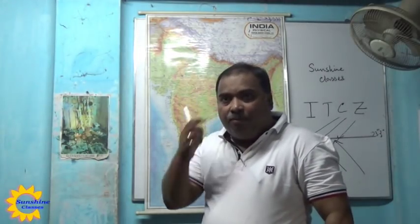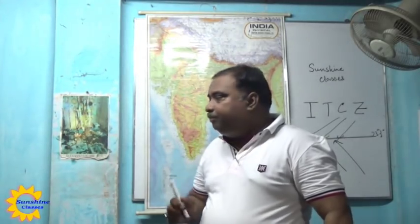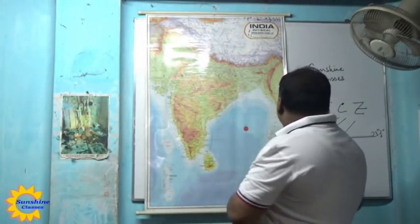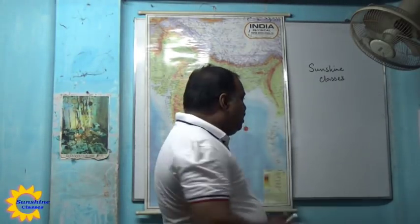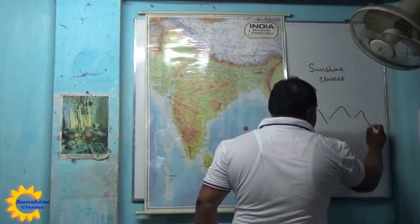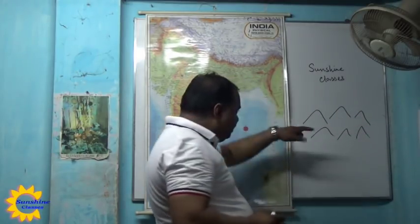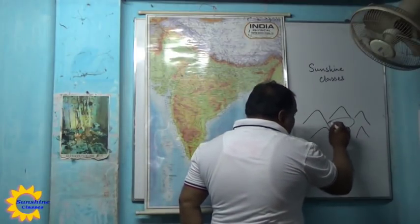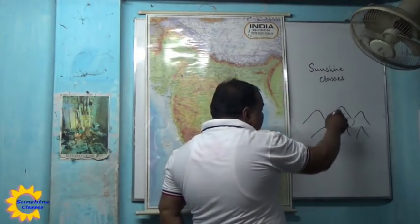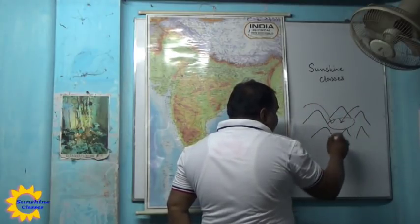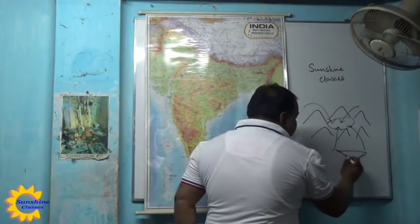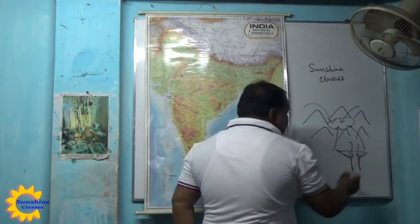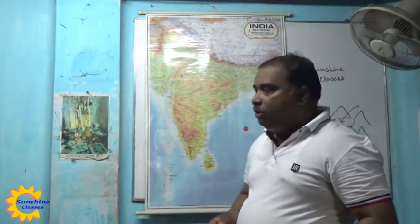There is a place called Mawsynram, which is in the Khasi hills of Meghalaya. There are three hills in Meghalaya: Garo, Khasi, and Jaintia. There is also Cherrapunji in the Khasi hills. When cloud-bearing air gets inside the Khasi hills, the surrounding mountains create a funnel effect. Due to this funnel effect, maximum rainfall happens here. Mawsynram is the place in the world that experiences maximum rainfall due to this funnel effect.